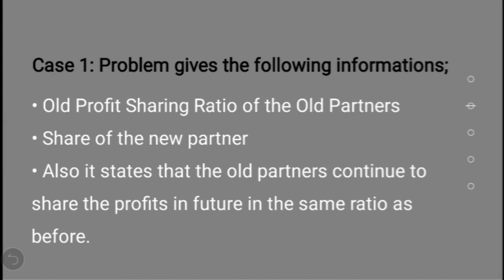In Case 1, the problem gives three pieces of information: the old profit sharing ratio of the old partners, the share of the new partner, and a statement that the old partners continue to share profits in the same ratio as before. Where these three informations are given in a question, Case 1 is applicable and you have to calculate the new profit sharing ratio as per Case 1.